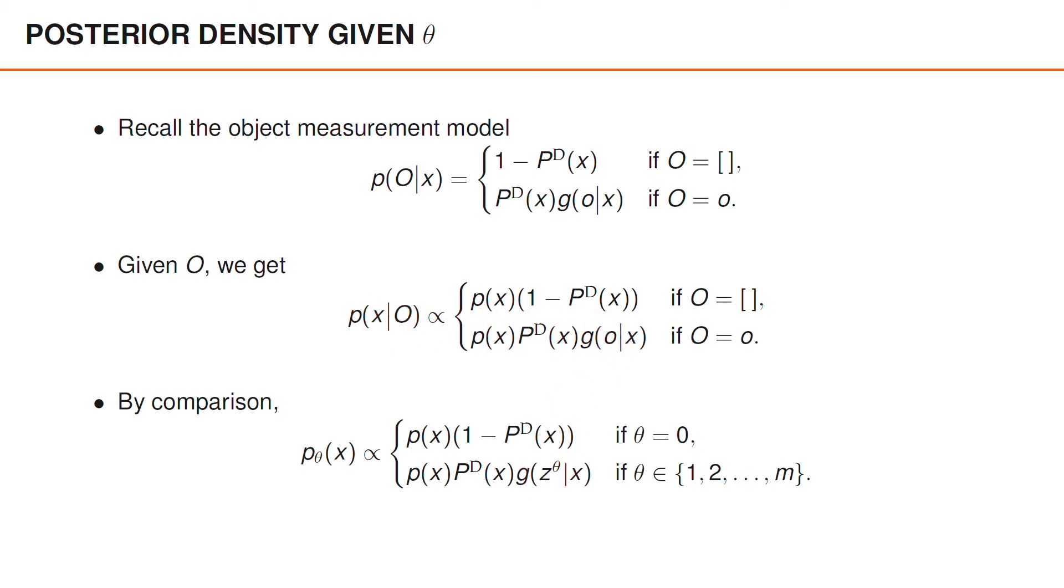Hopefully, you agree that all of this makes a lot of sense. The conclusion from this slide is that p_θ(x) is identical to the posterior of X given the object measurement matrix O, if we use the data association hypothesis θ and the matrix Z to determine the object measurement matrix O.